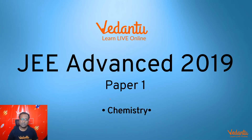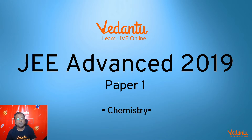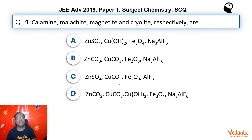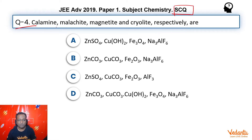Hi guys, my name is Shubhang Garodia, chemistry master teacher at Vedantu. Today we are going to talk about JEE Advanced 2019 Paper 1, question number 4. This is a single correct type question about ores and their formulas, which makes it very simple — we can follow option elimination very easily.